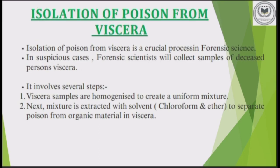Now let's discuss the isolation process of poisons. Isolation of poison is a very crucial process in forensic science. In many suspicious cases, forensic scientists collect samples of the deceased person's viscera — that is, internal organs — for analysis. The process involves several steps: viscera samples are homogenized to create a uniform mixture of similar constituents. The mixture is then extracted with a solvent, commonly chloroform or ether, to separate the poison from the organic material.